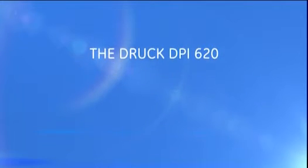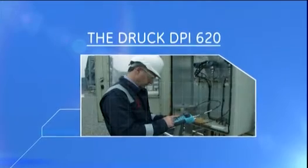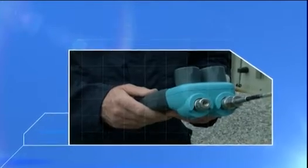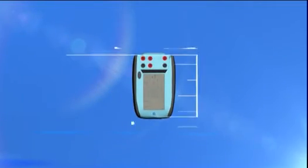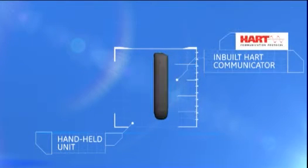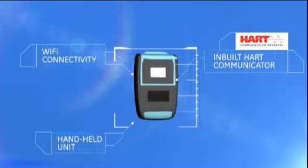The new DRUK DPI620 portable calibrator offers an advanced multifunction calibrator, heart communicator and PDA that will help you recalibrate the way you work. This is all you need for all your pressure, temperature and electrical calibration in the plant or out in the field.